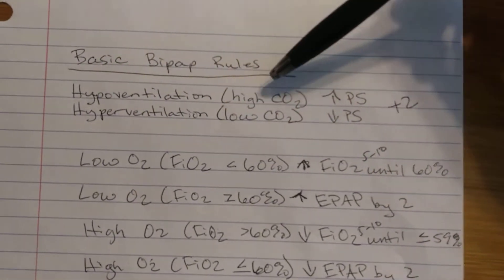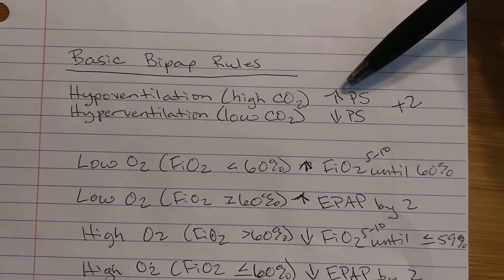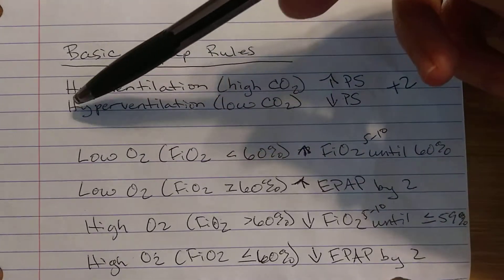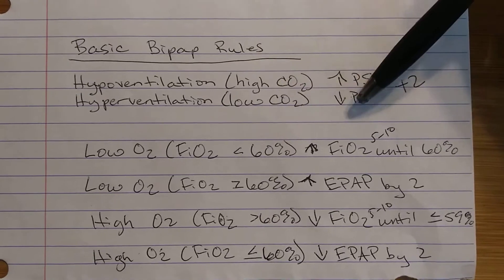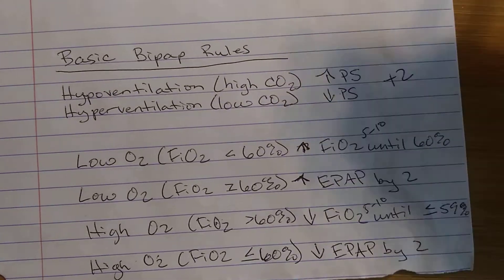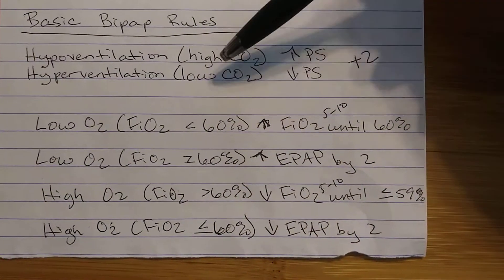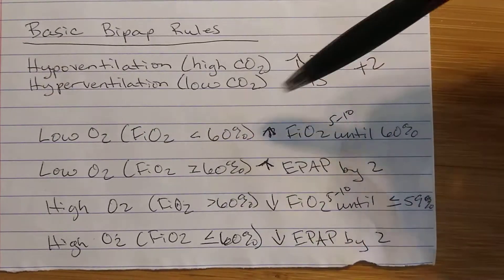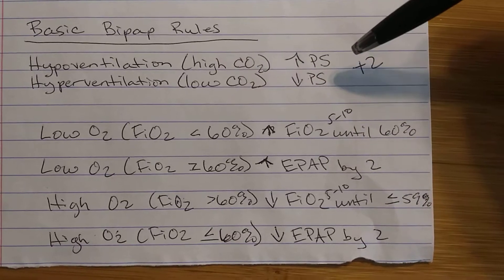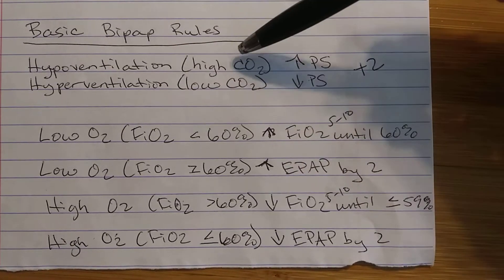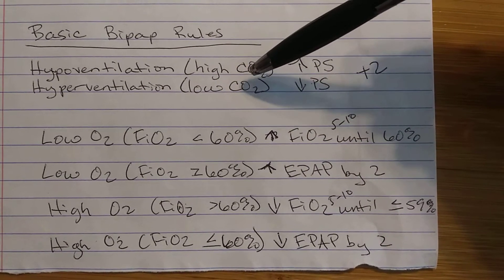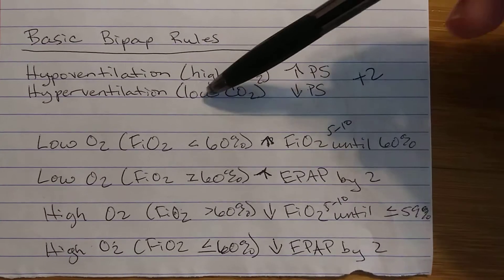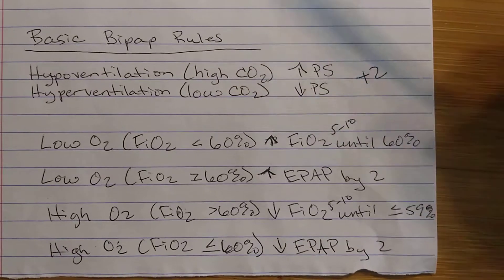If you have hypoventilation, which means you have high CO2, you increase pressure support by two at a time. If you have hyperventilation, which is low CO2, you decrease pressure support by two at a time. So if we have high CO2, we increase; if we have low CO2, we decrease. When you're looking at the pressure support number, you're looking at the CO2 — high CO2 means increase pressure support, low CO2 means decrease pressure support.